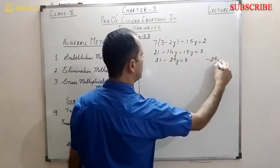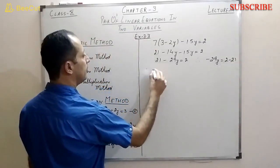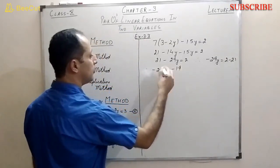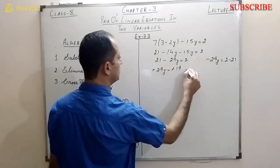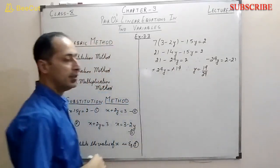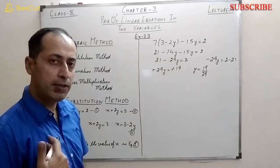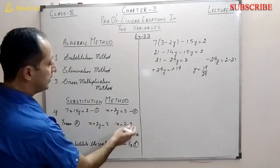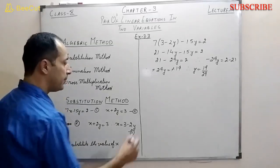Shifting 21 to the right: minus 29y equals 2 minus 21, so minus 29y equals minus 19. Cancelling the negatives on both sides gives y equals 19 by 29. Now I need to find x. I can substitute the value of y in any of the three equations, but since equation 3 is in terms of x, I use that.